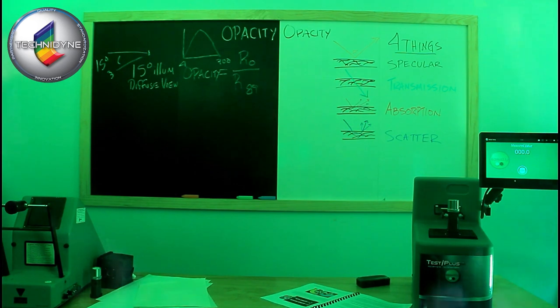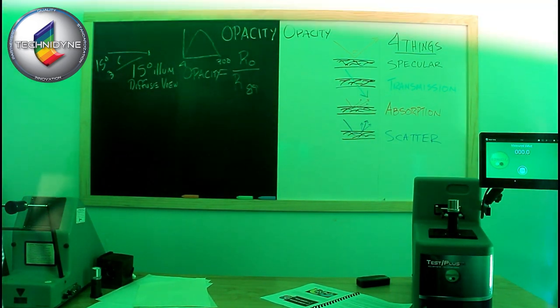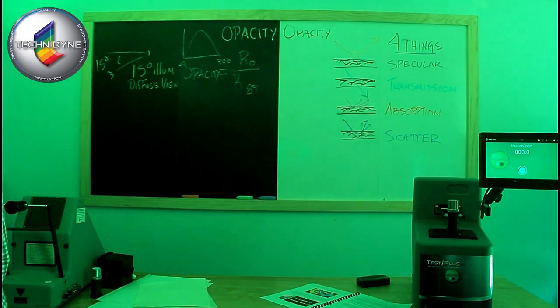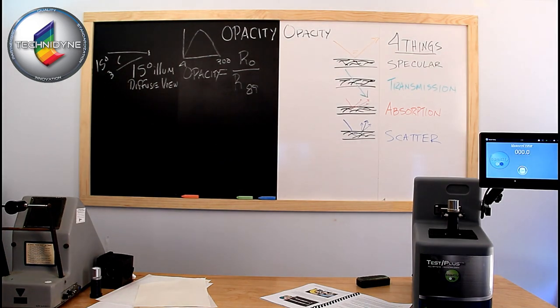So opacity is looking at light through a green lens. So if I'm an opacity instrument, that's the world as I see it, through a green lens like that.